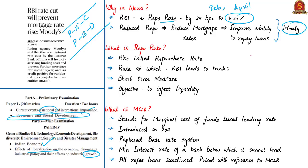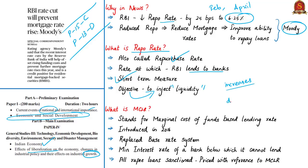Mortgaging is the process of borrowing money to buy a house. The repo rate, also called the repurchase rate, is the rate at which RBI lends to banks. This is done by RBI buying government bonds from banks with an agreement to sell them back at a fixed rate. The repo rate is a short-term measure changed according to needed circumstances in the economy, with the objective of injecting liquidity in the system. If RBI wants to make it more expensive for banks to borrow money, it increases the repo rate; if it wants to make it cheaper, it reduces the repo rate.